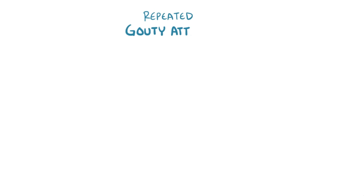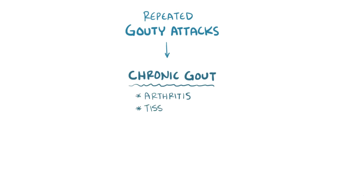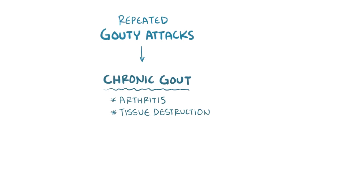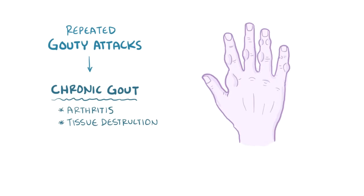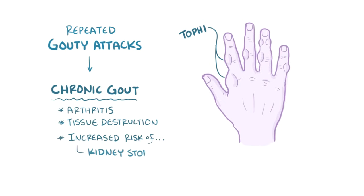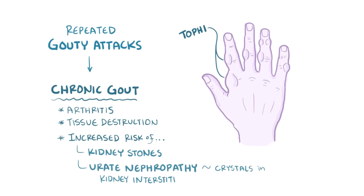Over time, repeated gouty attacks can develop into chronic gout, which is a type of arthritis with joint tissue destruction and permanent joint deformity. Chronic gout can eventually lead to permanent deposits of uric crystals, called tophi, which form along the bones just beneath the skin. Individuals with chronic gout are also at increased risk for developing kidney stones made of uric acid, as well as urate nephropathy, which is when uric crystals deposit in the interstitium of the kidney.